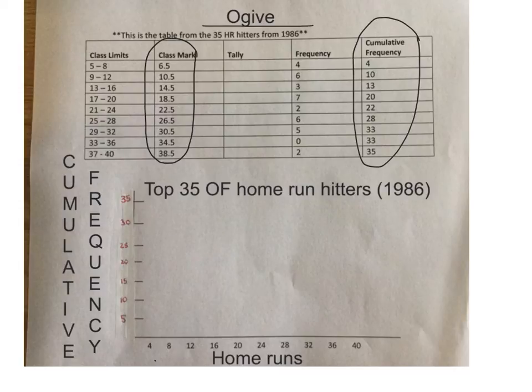Well, the first thing I'm going to do is I'm going to go between 4 and 8, which is where 6 and a half is. I'm going to say cumulative frequency is 4, so I'm going to put a simple little dot at 4. Then I'm going to go between 8 and 12 and put a dot at 10. Between 12 and 16 and put a dot at 13. Go ahead and take a couple seconds and fill this in.